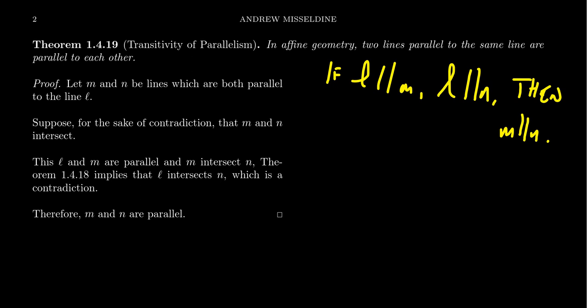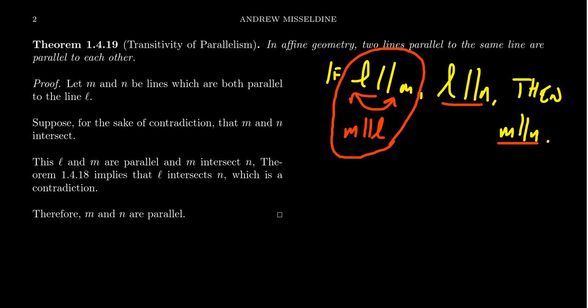To write transitivity properly, we might say: M is parallel to L, and L is parallel to N, therefore M is parallel to N. That's how transitivity of a relation is typically written. Because parallelism is a symmetric relationship, you can swap the order.